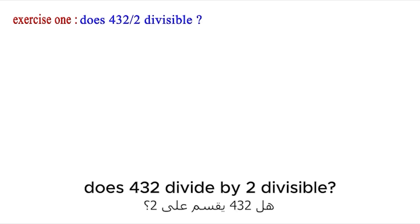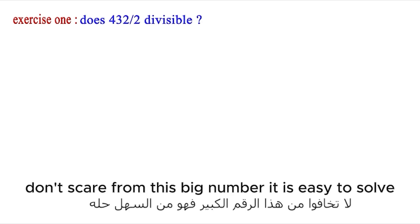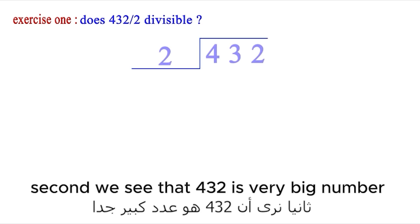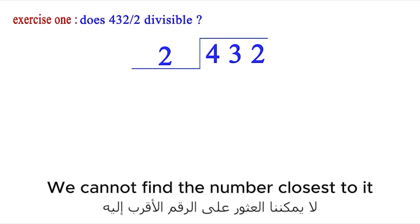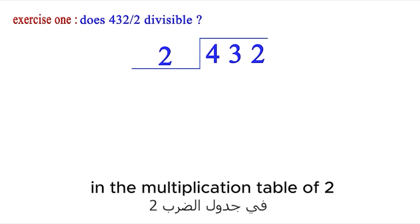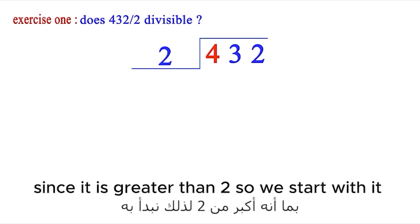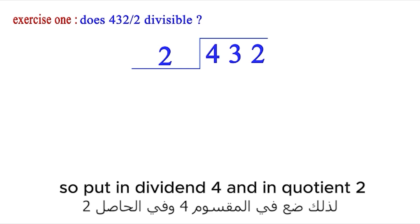First question: Is 432 divisible by 2? Don't be scared by this big number — it is easy to solve. First, place the numbers in their correct positions in the division. We see that 432 is a very big number, so we look at the first digit, which is 4. Since 4 is greater than 2, we start with it. 2 times 2 is 4, so put 4 under the dividend and 2 in the quotient.